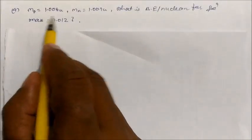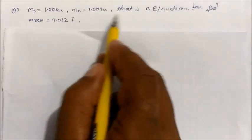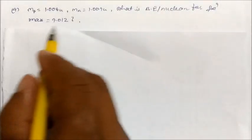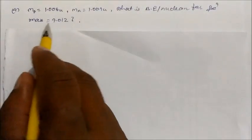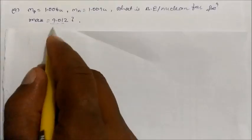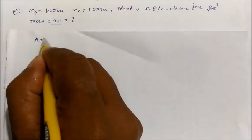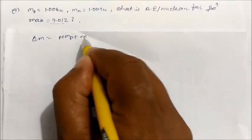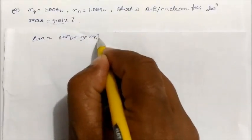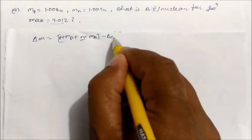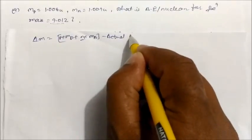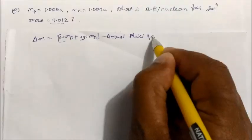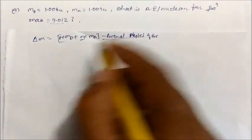We already know the mass of the proton and neutron. What is the binding energy per nucleon for the beryllium atom with atomic number 4? The actual mass of the beryllium atom is given. Again we use the same process: mass defect equals (number of protons × proton mass) + (number of neutrons × neutron mass) − actual mass of beryllium nucleus.